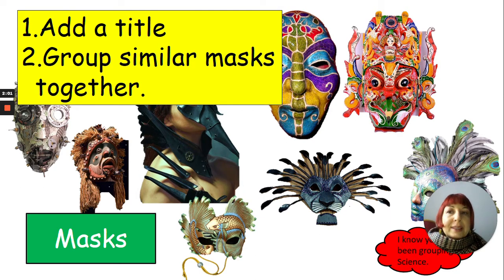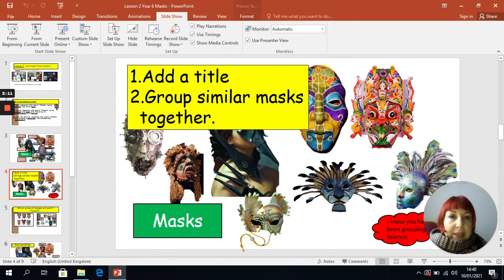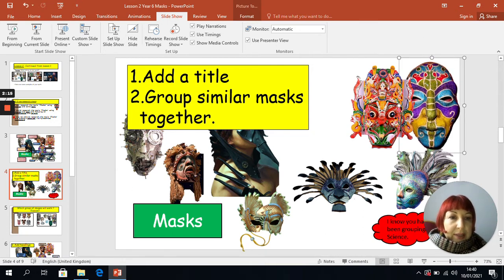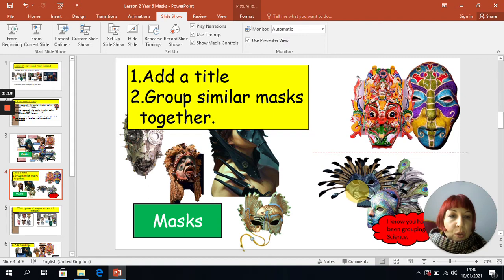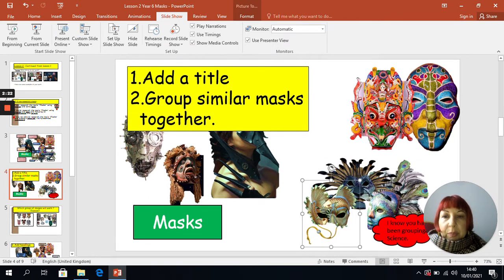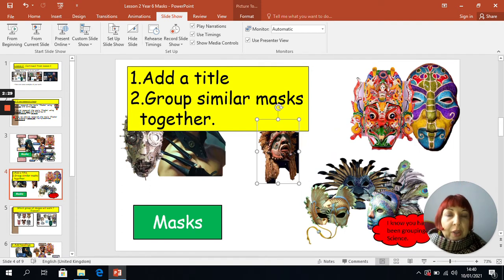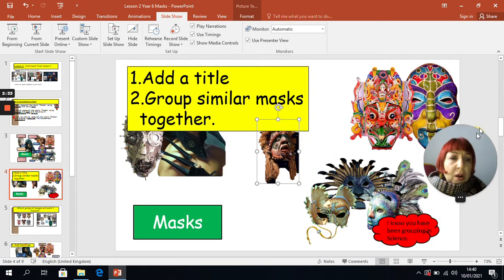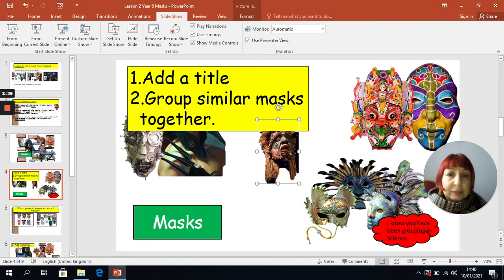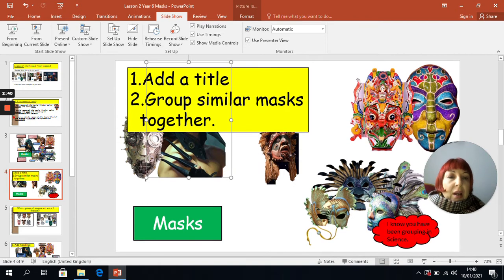I'd also like you to group similar masks together. So you're going to look at the masks that you have chosen and try to group them. For example, you might put colourful masks together, masks with an animal theme together, or masks which are made of the same materials together. It's completely up to you how you group your masks. I know you've learnt about grouping in science, so you are familiar with this. Pause the video and complete step one.